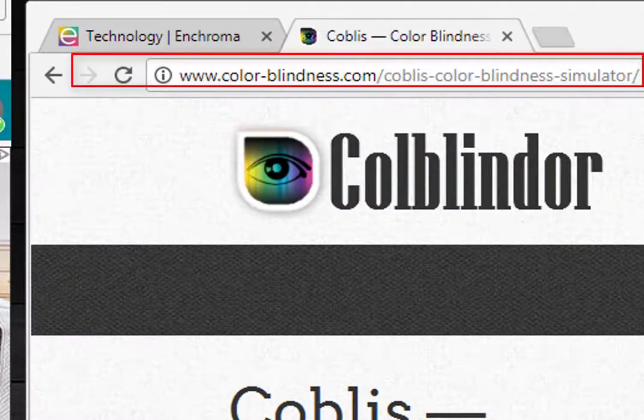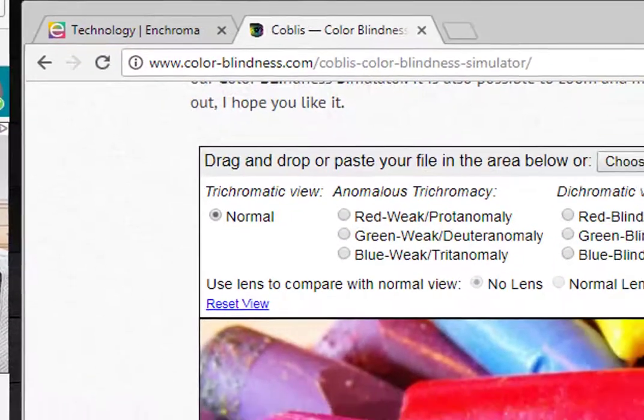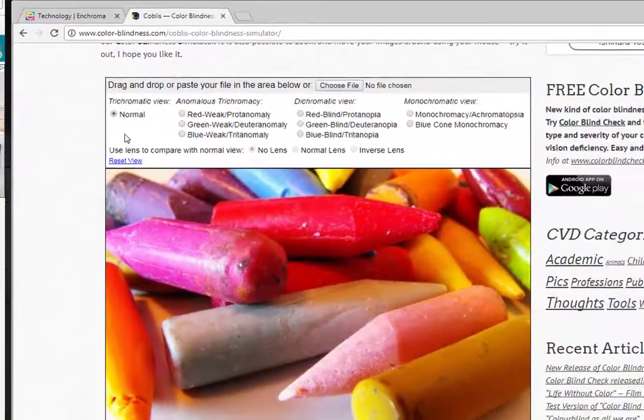If you're looking for the website, you want to look for www.color-blindness.com slash C-O-B-L-I-S hyphen color hyphen blindness hyphen simulator. That's the web address.